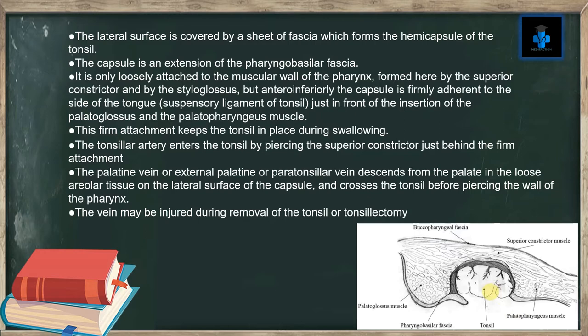It is only loosely attached to the muscular wall of the pharynx, formed by the superior constrictor and by the styloglossus. But inferiorly, the capsule is firmly adherent to the side of the tongue by the suspensory ligament of the tonsil, just in front of the insertion of the palatoglossus and palatopharyngeus muscles. The firm attachment keeps the tonsil in place during swallowing.